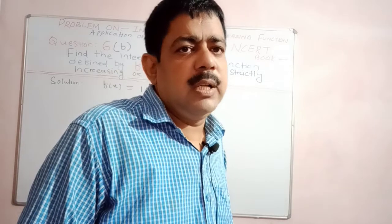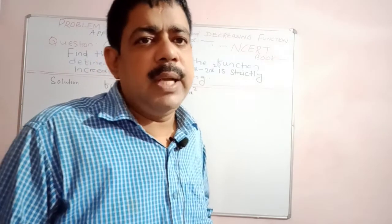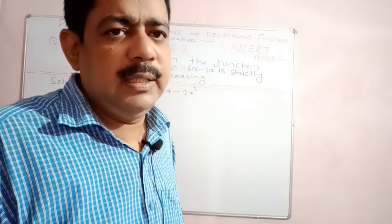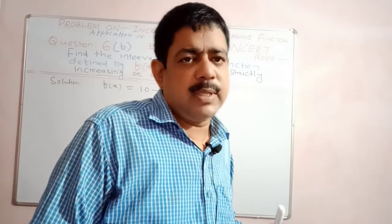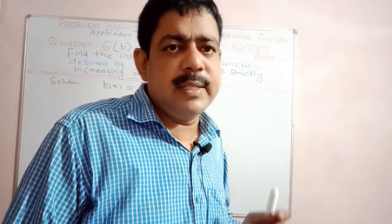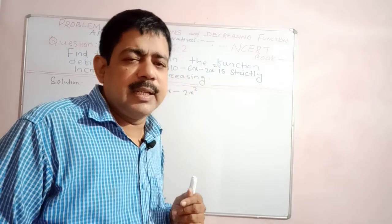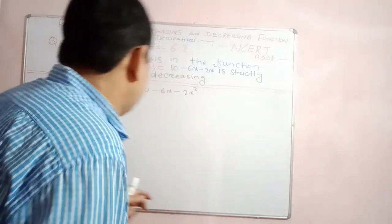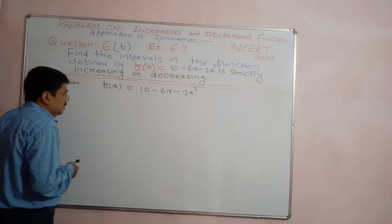In this question, it is given that we have to find the intervals in which the function is strictly increasing, and intervals in which the function is strictly decreasing in the set of real numbers. The function given here is f(x) = 10 - 6x - 2x².